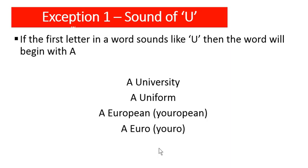So those were the three rules: singular countable nouns starting with consonants use 'a,' singular countable nouns starting with vowels use 'an,' and 'the' is used for definite, specific reference. But there are some exceptions in the English language.